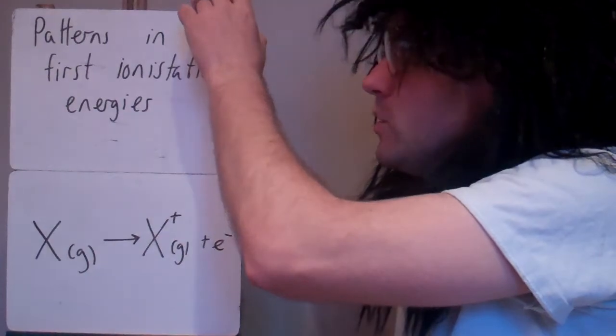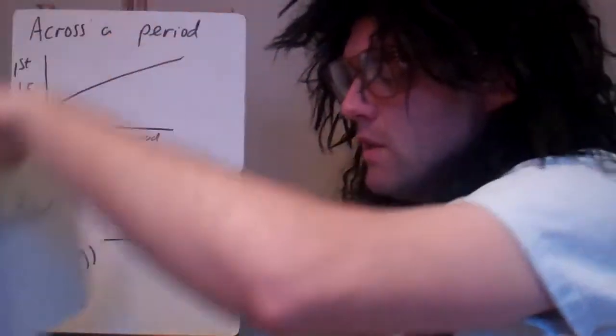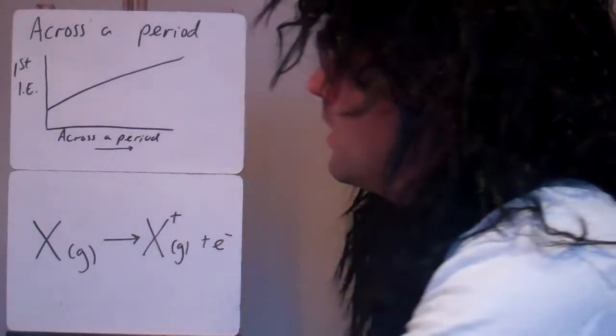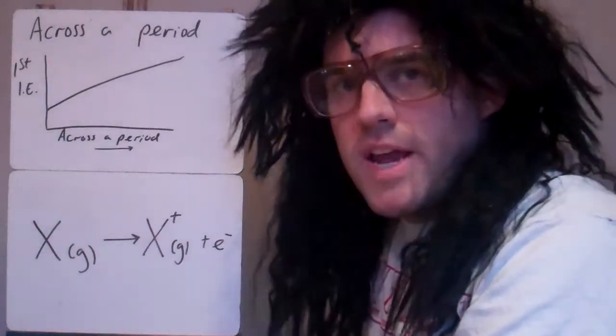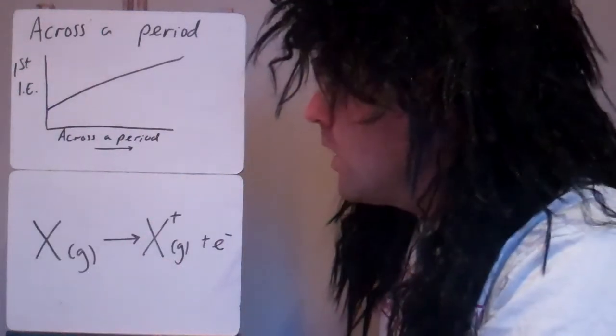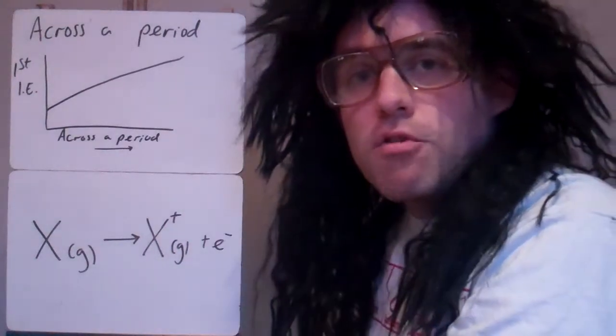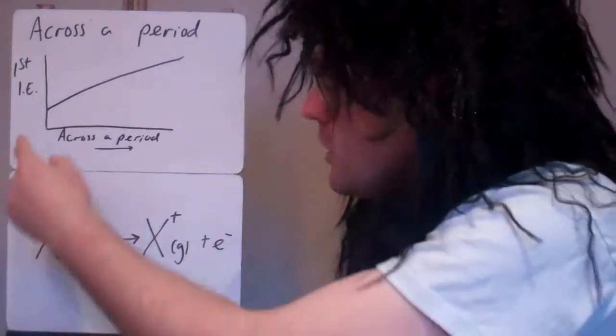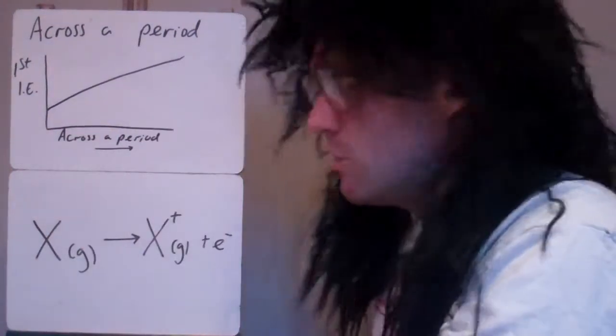So, look at patterns, we're comparing how much energy it takes for that process to occur. As you go across a period, it's across a row of the periodic table, the first ionisation energies, in general, increase. We're just looking at general patterns there. So in general, that first ionisation energy increases.